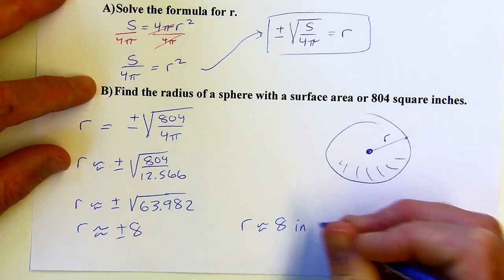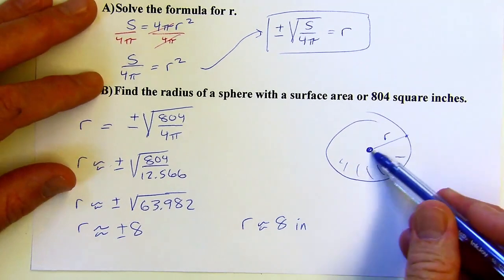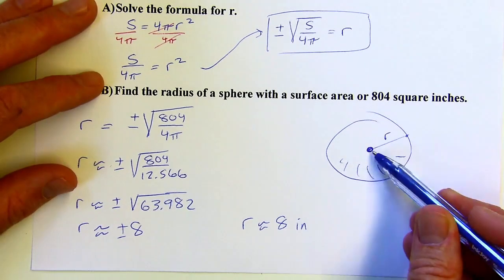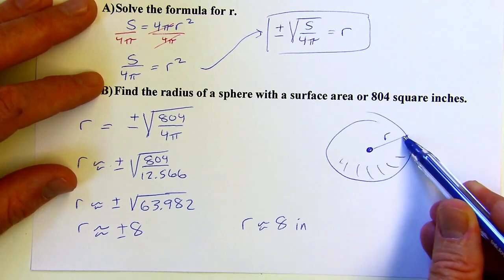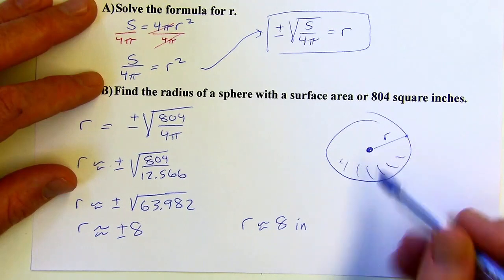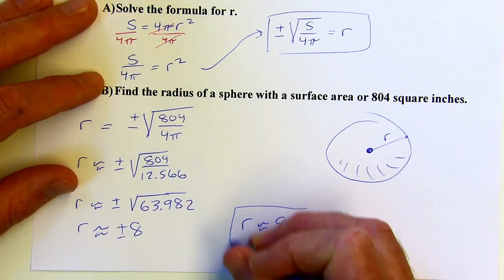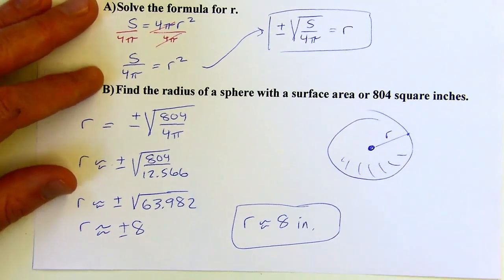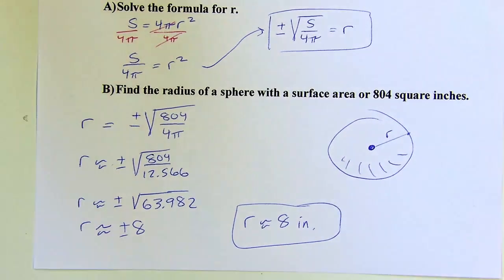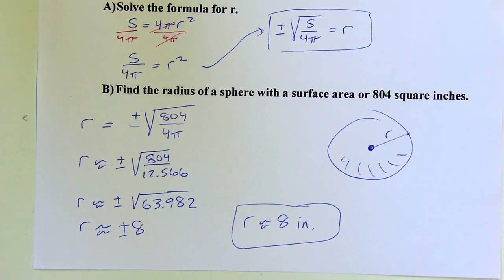The units are inches — since the surface area was in square inches, the radius is in inches, which you could measure with a ruler. And that's the end of the section. See you next time.